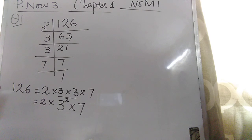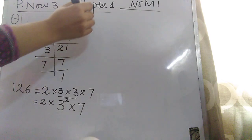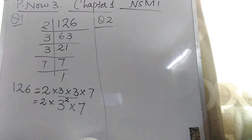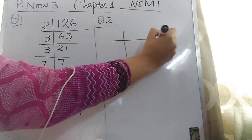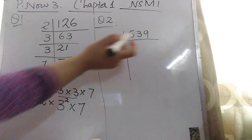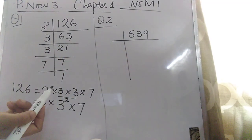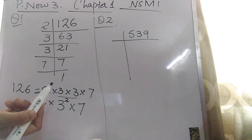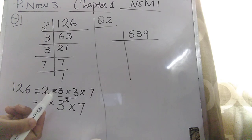Question number 2 is: express 539 as a product of its prime factors. Again we have to make the prime factors of 539. The last number is odd, so it is not divisible by 2. Now let's come to the next number, which is 3 — it is also not divisible by 3.